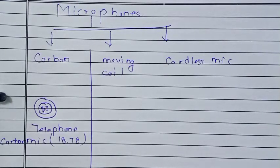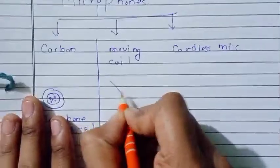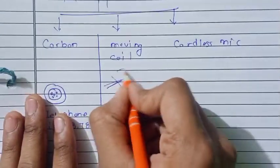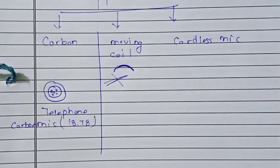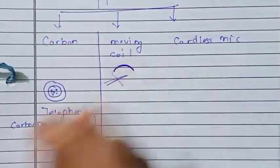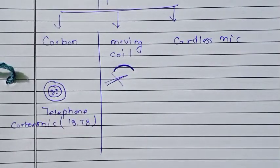When sound waves hit the diaphragm, the coil oscillates back and forth in the magnetic field, generating a current. This creates an electrical signal, which is the audio output of the moving coil microphone.